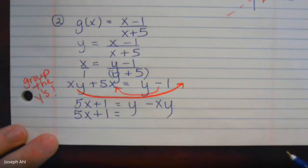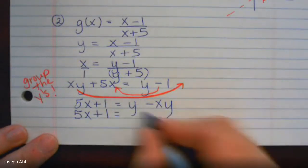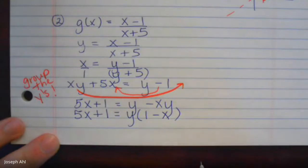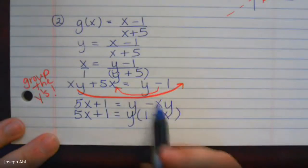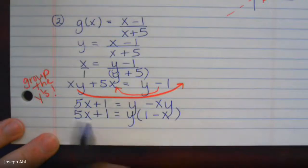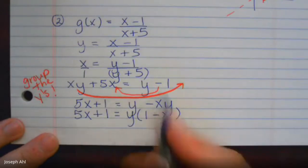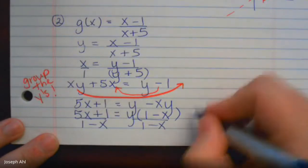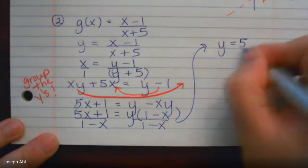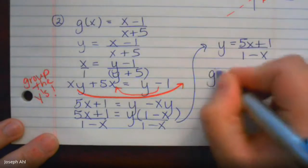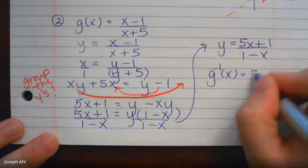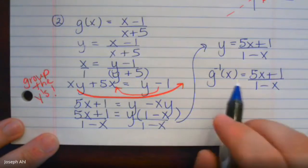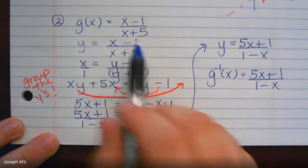The y's are nicely grouped together because you can now take out y as a GCF — that's the most important step. If you have multiple y's, get them all on the same side, everything without y on the other, then factor out y as a GCF and divide. In the end you get y = (5x + 1)/(1 - x), which in inverse notation is the inverse function. Definitely a bit more complicated algebraically, but you'll see similar examples.